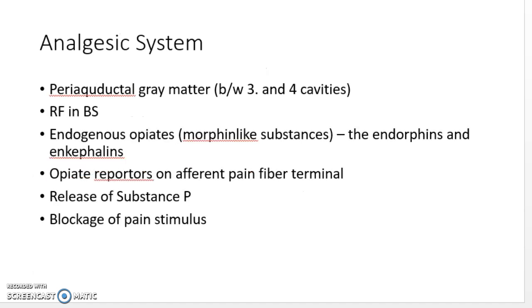The analgesic system is essentially the pain inhibitory system — the opposite of pain activation. Drugs like opiates or morphine inhibit pain so you don't feel it at all. This occurs in the periaqueductal gray matter, located between the third and fourth ventricles, and also in the reticular formation. This system manages pain suppression.